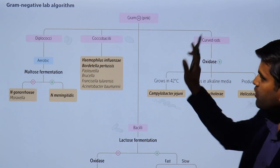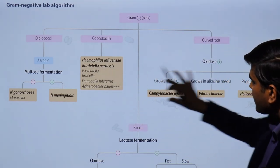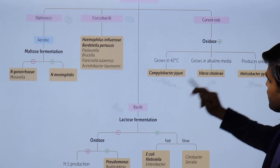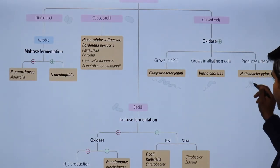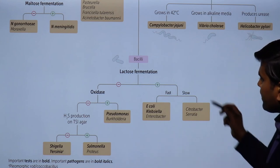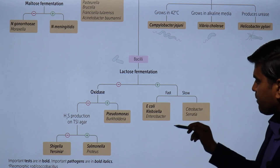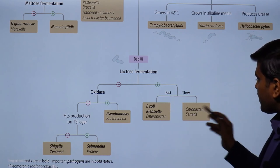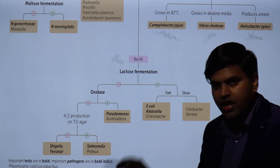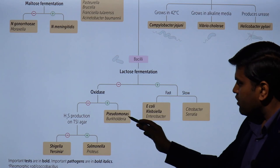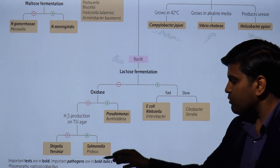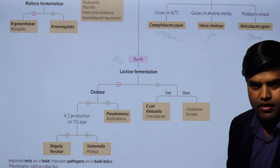In summary: gram-negative cocci belong to the Neisseria and Moraxella groups. Coccobacilli include Haemophilus, Bordetella, Pasteurella, Brucella, Francisella, and Acinetobacter. Curved rods are oxidase positive — Campylobacter, Vibrio cholerae, and Helicobacter pylori. True bacilli are differentiated by lactose fermentation on MacConkey agar: pink colonies are E. coli, Klebsiella, Enterobacter, Citrobacter, and Serratia. Pale colonies are Pseudomonas, Burkholderia, Salmonella, Proteus, Shigella, and Yersinia, further differentiated by oxidase test and H2S production.